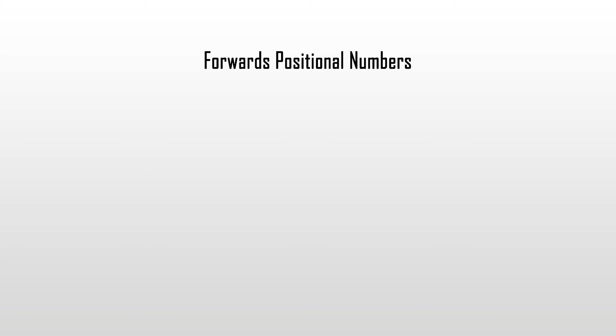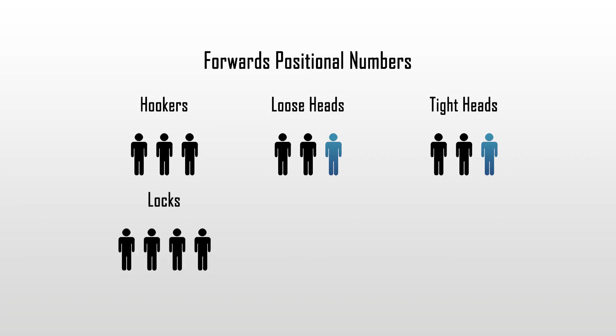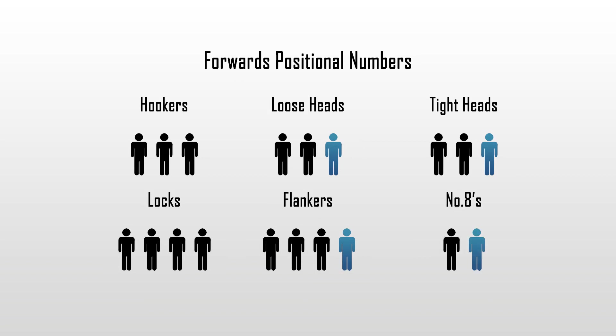Now let's break it down into the structure of individual positions. On average, the majority of teams will bring three hookers and five props, with normally two loose heads and two tight heads, plus one more who can play either side. Into the back five, there would normally be four locks, and depending on which split is chosen, three to four flankers and one to two number eights.